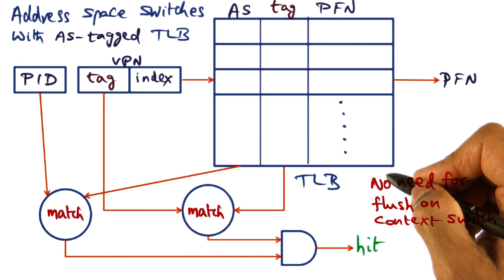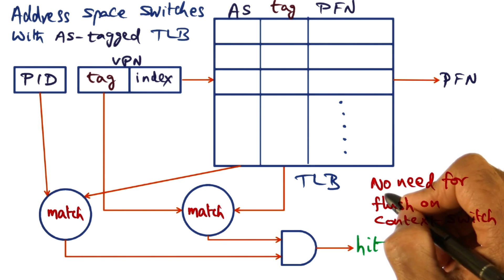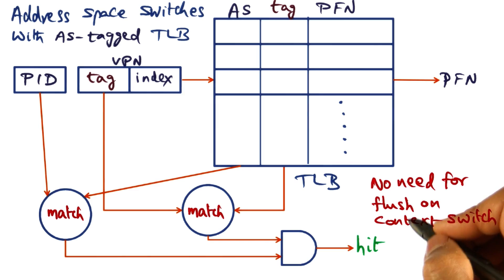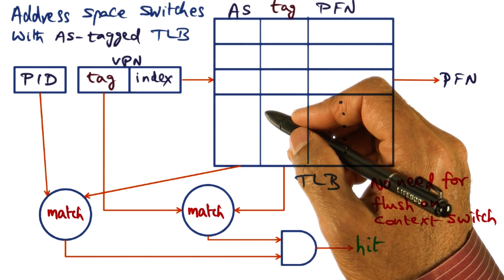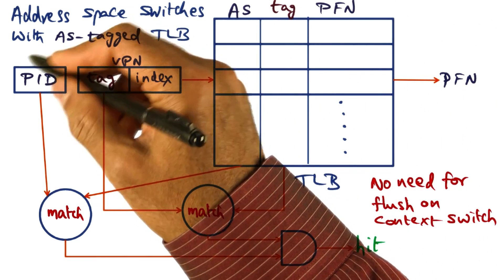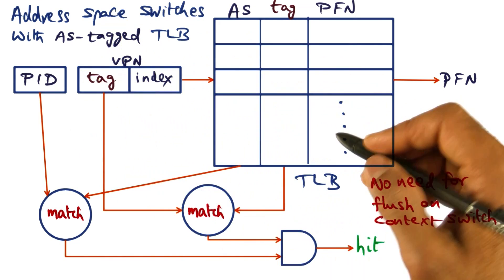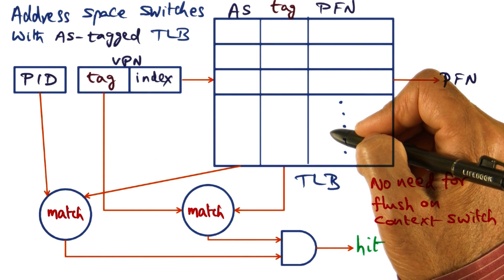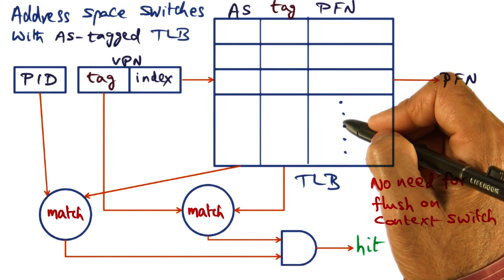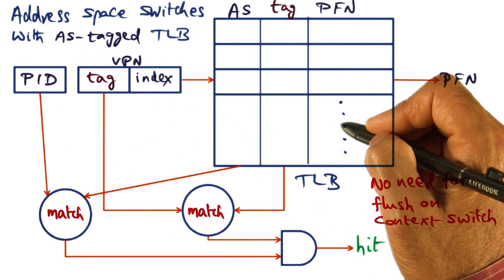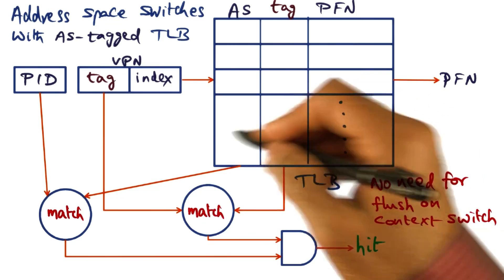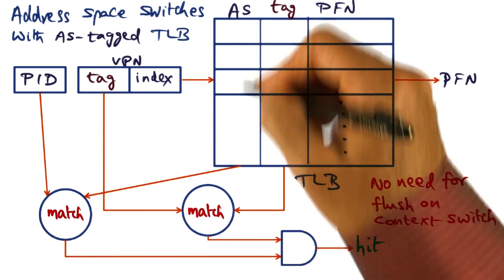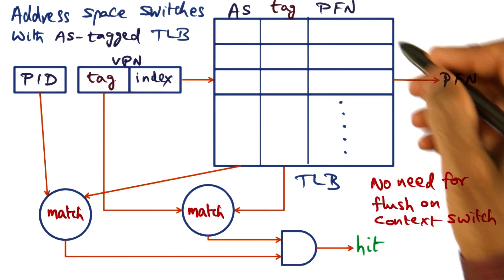Therefore, when we do a context switch from one process to another, there is no need to flush the TLB because it may contain translations for both the previously executing process and the new process. The hardware disambiguates these entries by matching the process ID against the address space tag contained in the TLB.